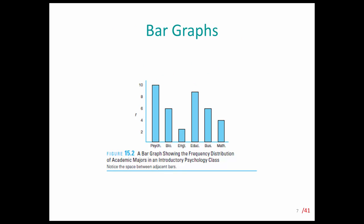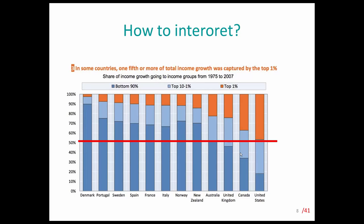One more way is the bar graph. A bar graph is similar to a histogram, except the histogram uses continuous numbers, whereas here we are dealing with a categorical or nominal scale. For example, this chart shows how many of the students in the sample were from psychology, how many from biology, how many from English, and so on.